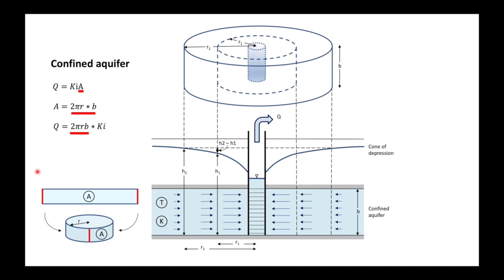At our outer radius at r2, our discharge will be 2πr2 times b times k times i2. i2 is the hydraulic gradient at this location, so basically a line drawn tangent to the cone of depression at this location. Because we have steady state, the discharge at the outer radius will be the same as the discharge at the inner radius. What I'd like you to notice is that b and k are constants; they don't change. Our actual thickness doesn't change.